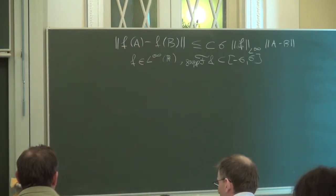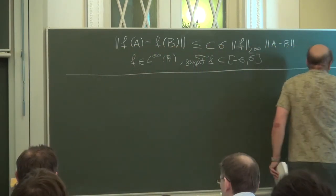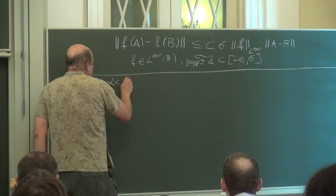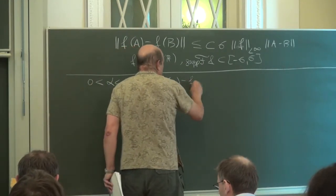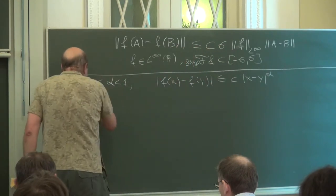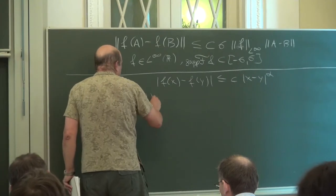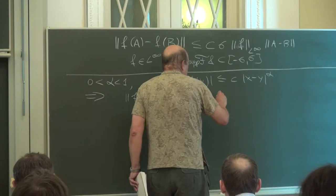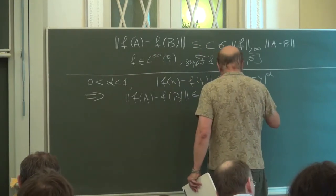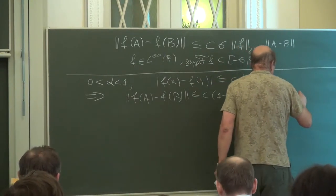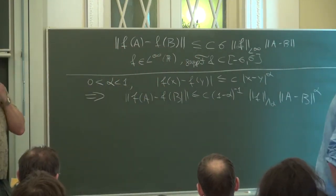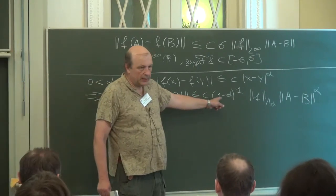Let me show how to use this inequality to prove that if f is a Hölder function of order alpha, then it is operator Hölder. So suppose alpha is between 0 and 1, f is a Hölder function, which means that |f(x) - f(y)| is less than or equal to a constant times the norm of f in lambda-alpha times the norm of |A - B| to the power alpha. So it is operator Hölder of the same order alpha, but here we have a constant that depends on alpha.